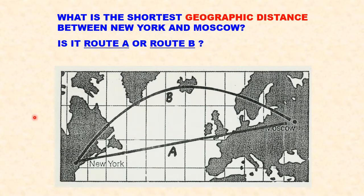Didn't you learn in geometry that the shortest distance between any two points is a straight line? That's true, but the problem is the real world — the globe has a curved surface, but maps are flat. There is distortion whenever you transfer a three-dimensional globe to a flat piece of paper. In this case there's more aerial distortion in the higher latitudes, so it's better to look at a globe to see that.